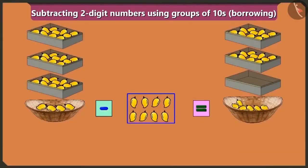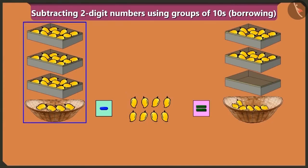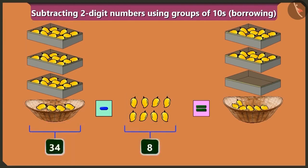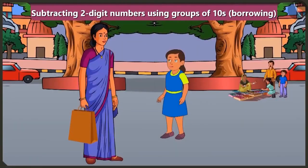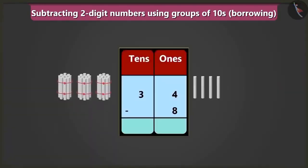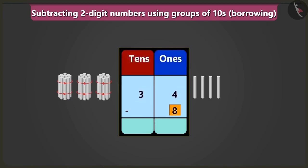So Bubbly, we subtracted 8 mangoes from 34 mangoes, so now there are 26 mangoes. It means if we subtract 8 mangoes from 34 mangoes, we would have 26 mangoes left. Mummy, how is subtraction done? Come, I will explain. To subtract 8 from 34, we will write 34 and 8 in the box of ones and tens. 34 means 3 tens and 4 ones. Now, we have 8 ones, so we will write it in the box of ones. Its box of tens will stay empty. First of all, we will subtract 8 from 4 in the box of ones.